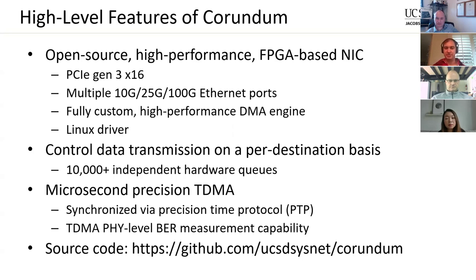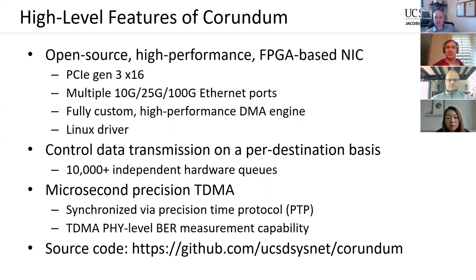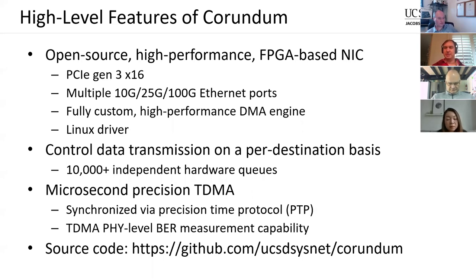Corundum provides control of data transmission on a very fine-grained per-destination basis, supporting thousands of hardware transmit queues. In software we classify traffic per destination, then control it with a hardware scheduler on the NIC, enabling microsecond-precision TDMA that can interface with the optical switches we're using. We also have a PHY-level measurement capability similar to what we were doing for the IBM work. All of this is open source on GitHub right now — you can download it and try it.